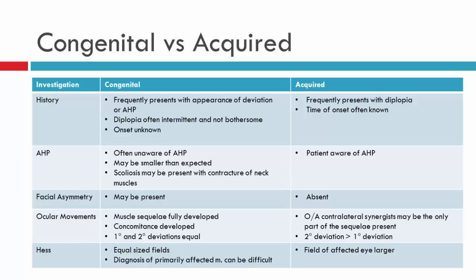Here we have a table that distinguishes between congenital and acquired deviations, or longstanding versus recent, from Anson's and Davis. Looking at history: patients with congenital or longstanding deviations will present due to the appearance of the deviation or the abnormal head posture. Because it's been there for a long time, diplopia is not as bothersome or may be intermittent. With congenital deviations, the patient is unfamiliar with onset and may not be able to indicate when they first noticed the deviation or diplopia.